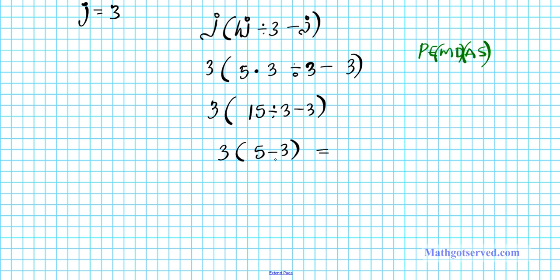Now we do the subtraction. Remember, all we are doing is simplifying the parenthesis completely first before we do anything else. So we have 3 times 2, and then we can multiply to get 6. So there goes your final answer.